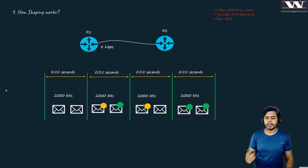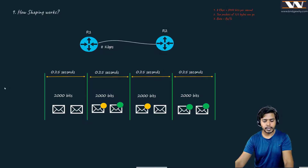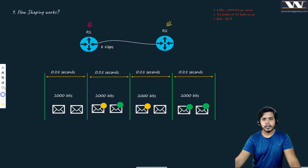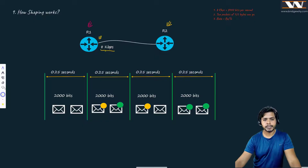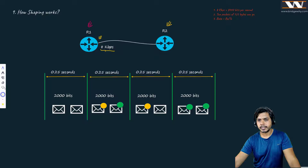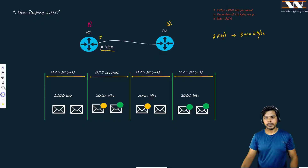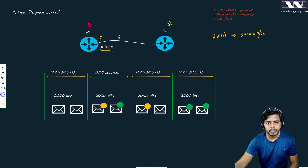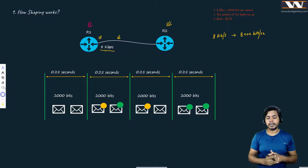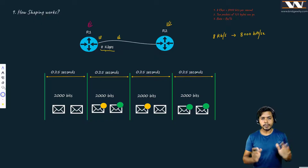My topology is simple: I have Router 1 and Router 2 with a link between them working at 8 kilobits per second. At 8 kilobits per second, the meaning is simple — this interface can send 8000 bits per second. That is all there is to it.